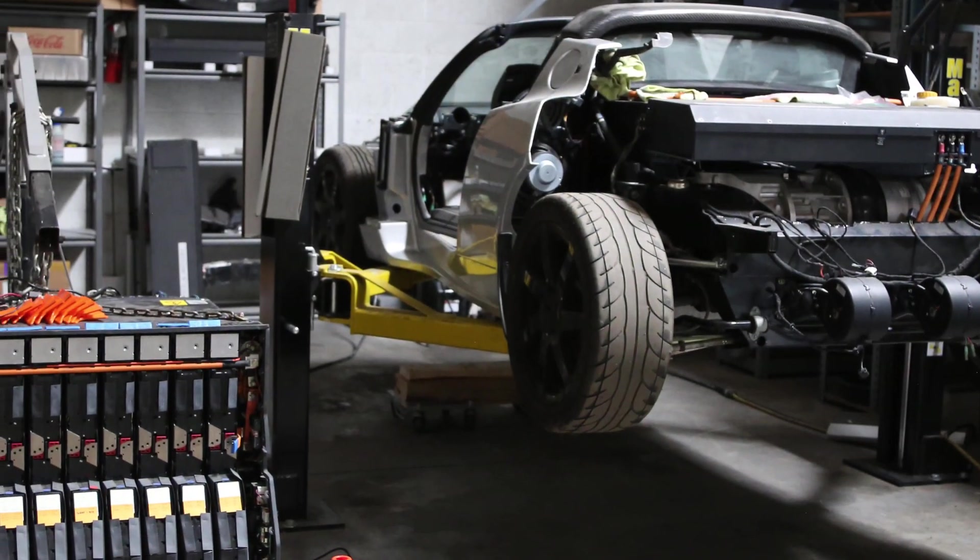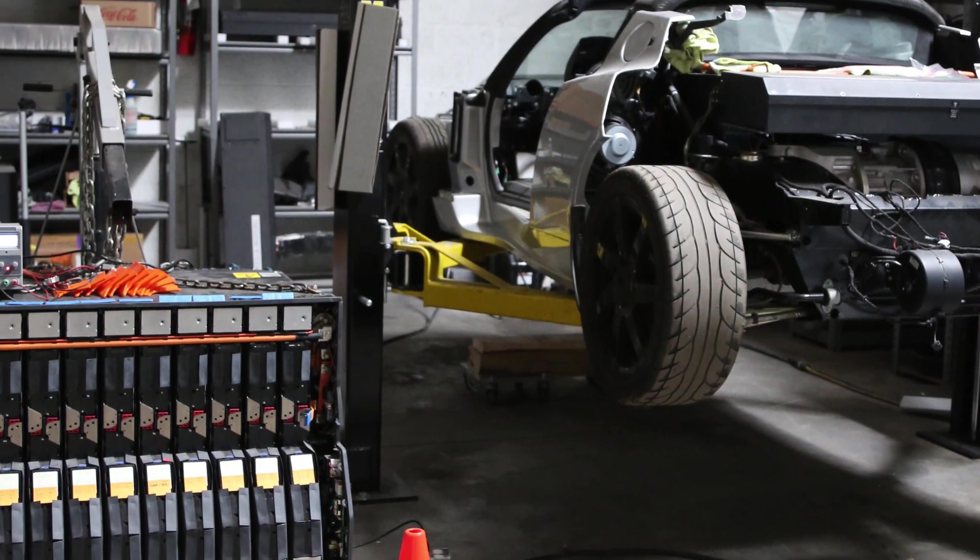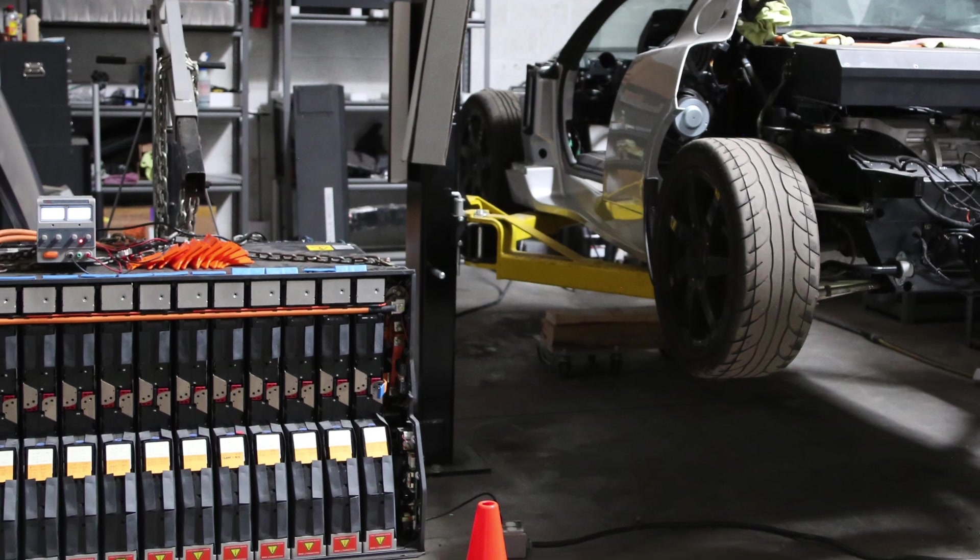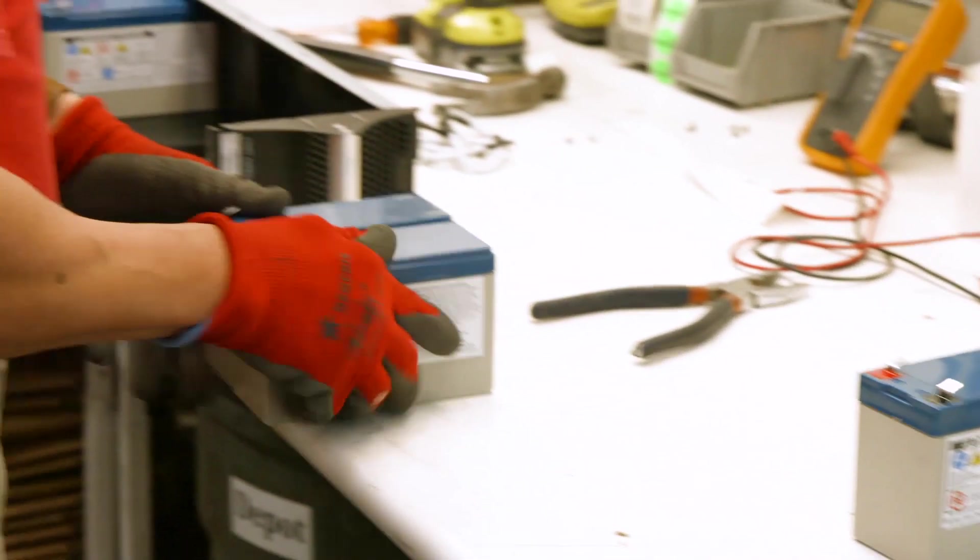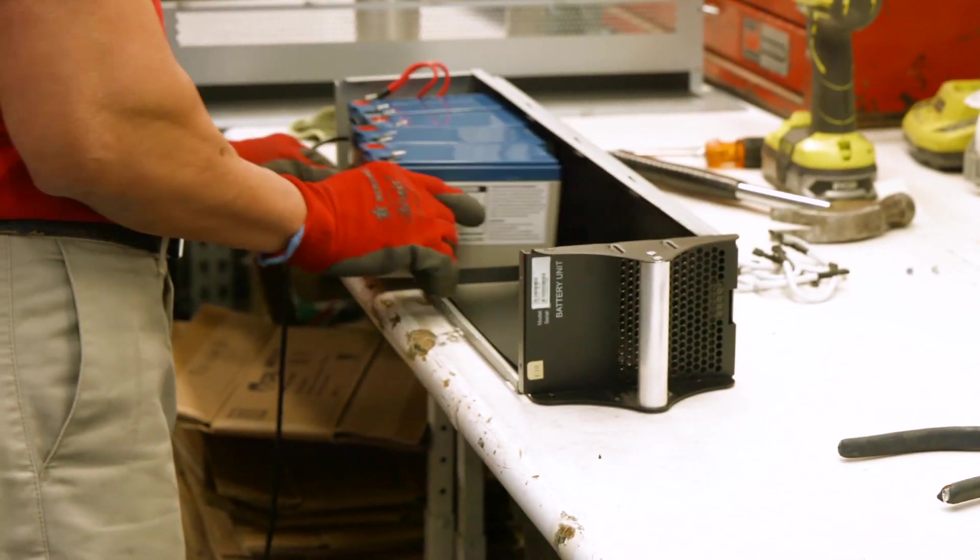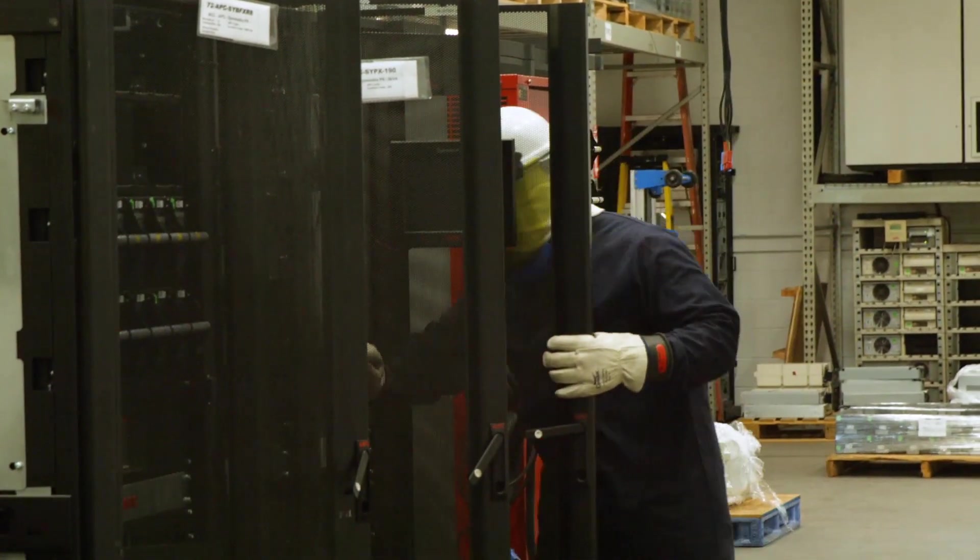They bought their first Roadster, pulled it apart, took out the battery, and reverse engineered the PEM. We realized from then on that this is exactly what the company Gruber Power has been doing for some time - working on UPS systems and the modules within them. It's just an inverter, the very same thing you find in the PEM of a Roadster.